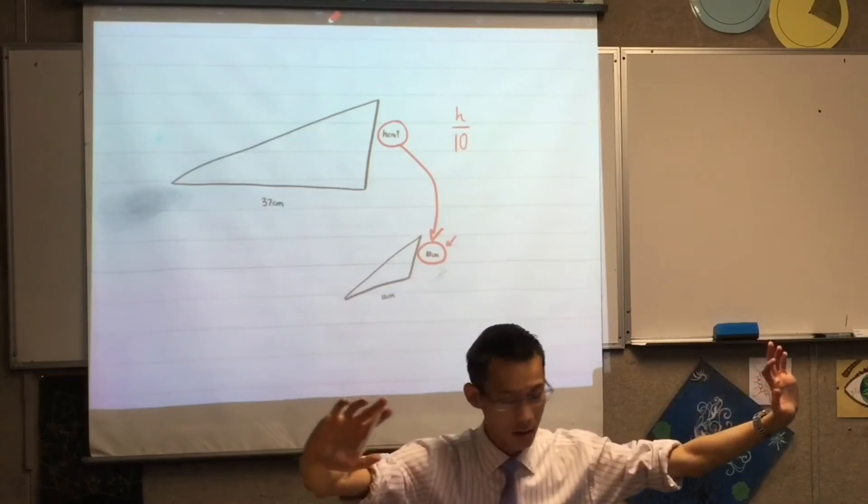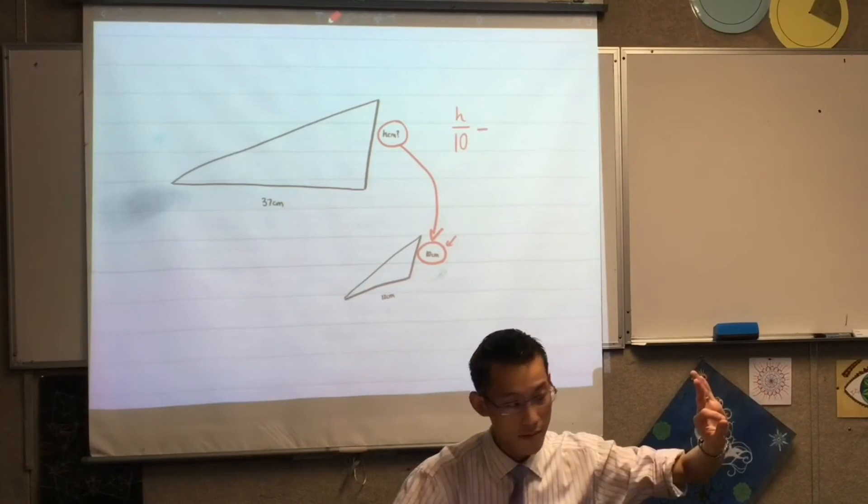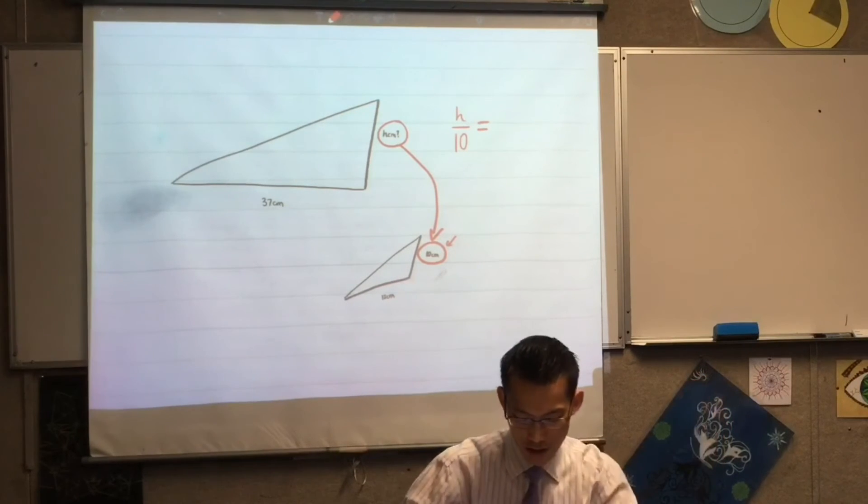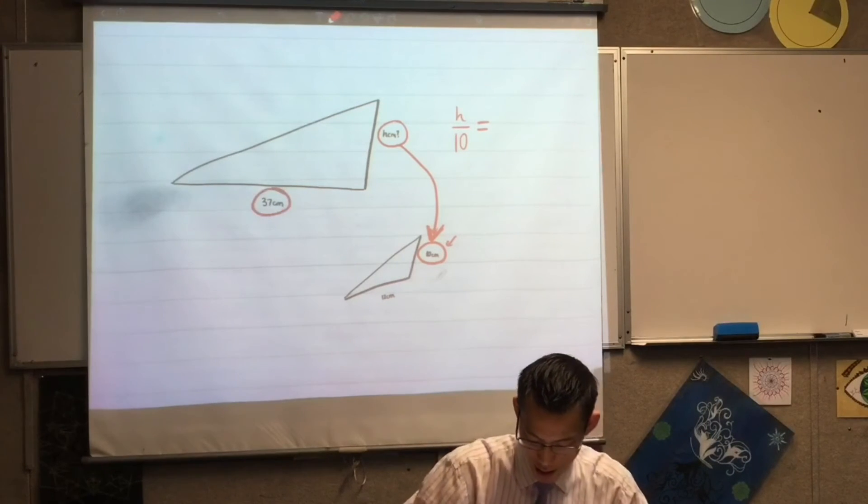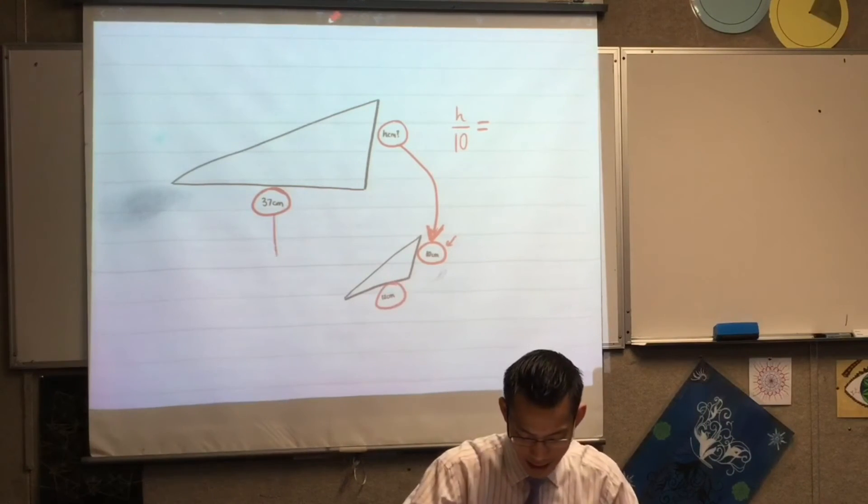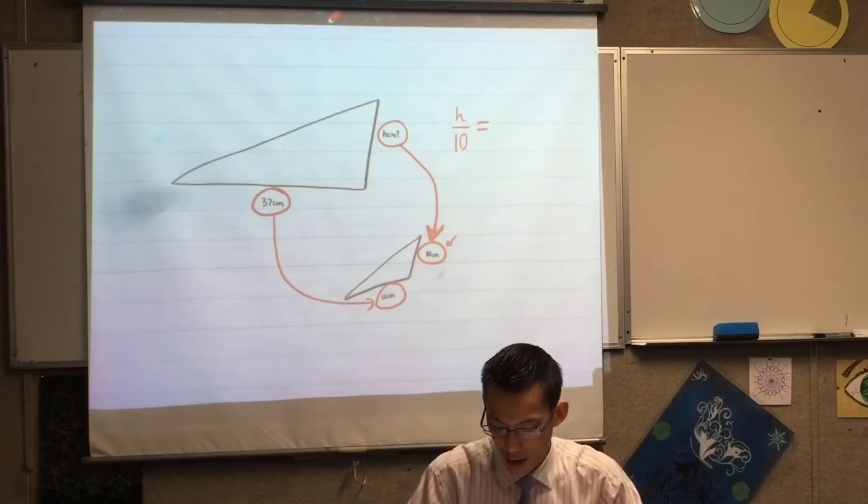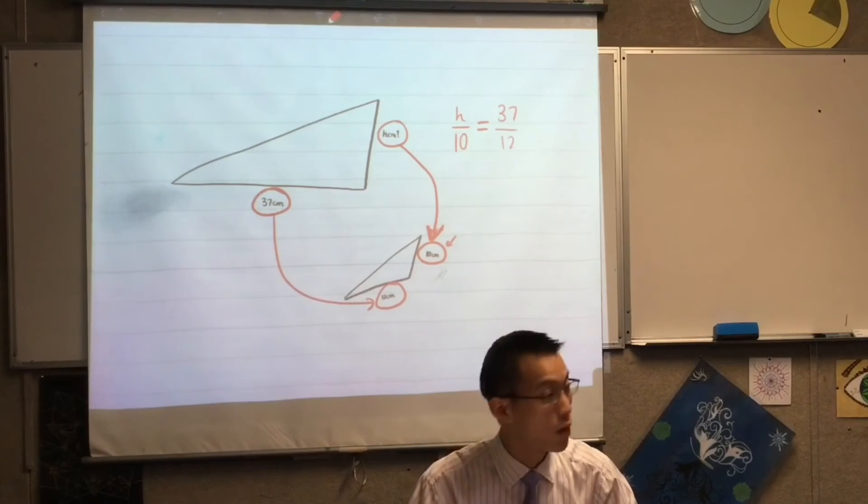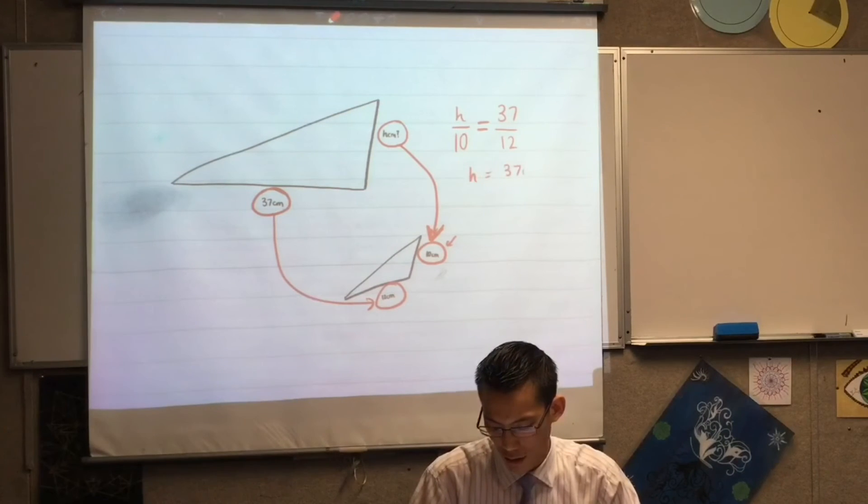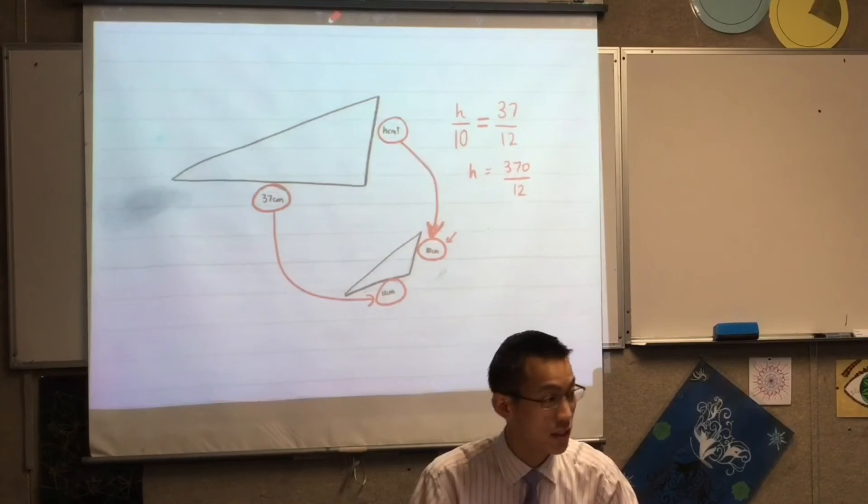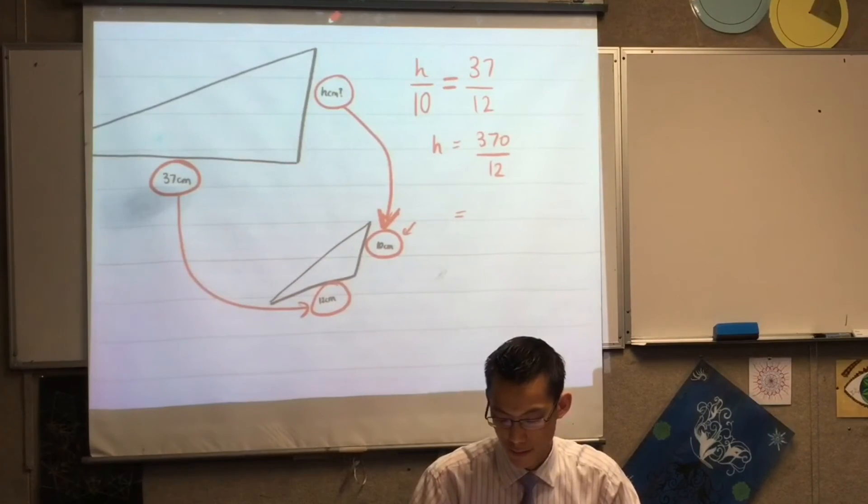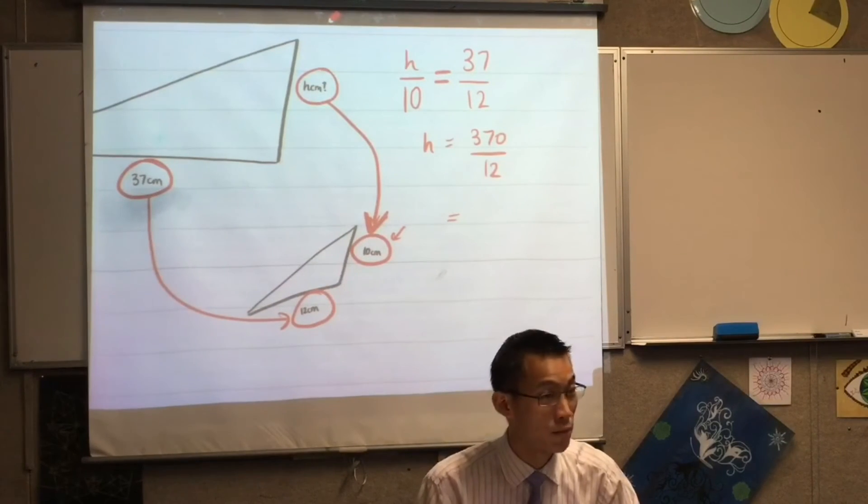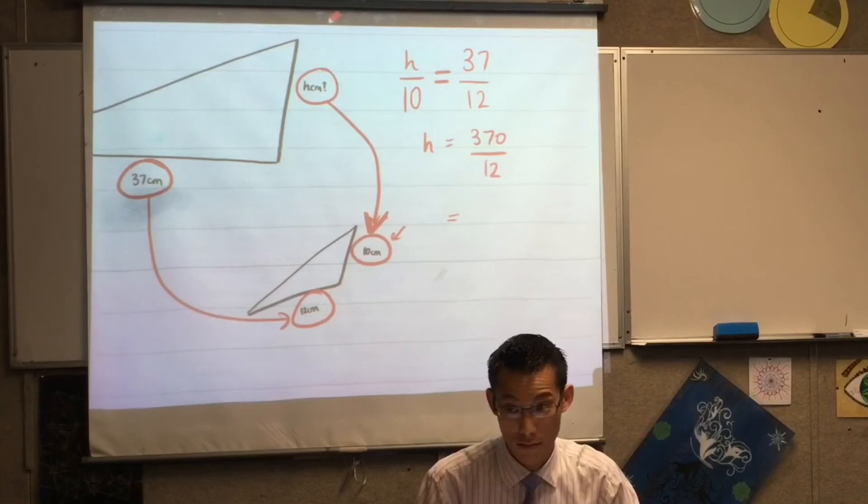I've got the other pair, this pair of lengths, and that gives me this relationship. Yeah, so 37 over 12. So can someone tell me what 37 over 12 actually comes out to? You can... I get one decimal place. I multiplied across by 10, yeah, yeah.